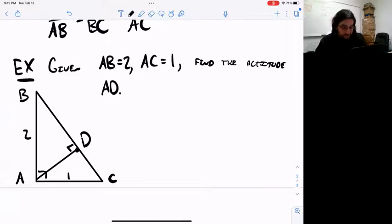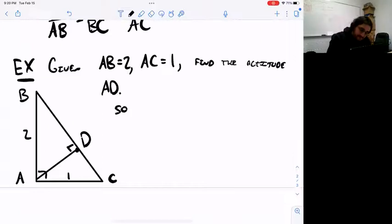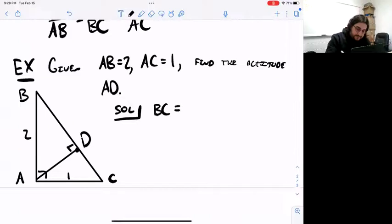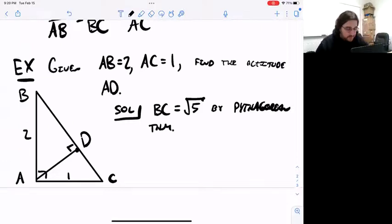There are a lot of different ways to solve this problem, but here's one way that we could do it using similar triangles. So here's the solution. By the Pythagorean theorem, I know that BC equals root five. Because two squared plus one squared has to equal BC squared. Two squared plus one squared is five. So that's the measure of BC. So now I have all the side lengths in the big triangle ABC.